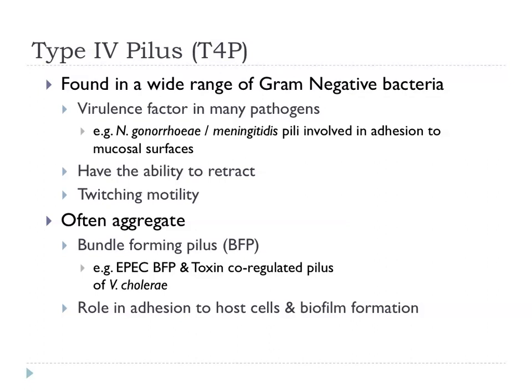Related to the pseudopilin, there is an actual pilus — a type 4 pilus — associated with this kind of secretion system. This is found in a wide range of gram-negative bacteria and is often a key virulence factor. Meningococci and gonococci have pili involved in adhesion to mucosal surfaces and playing important roles in pathogenesis. Interestingly, these pili have the ability to retract and pull back, and by attaching to a surface, pulling and releasing repeatedly, they can mediate a kind of motility known as twitching motility.